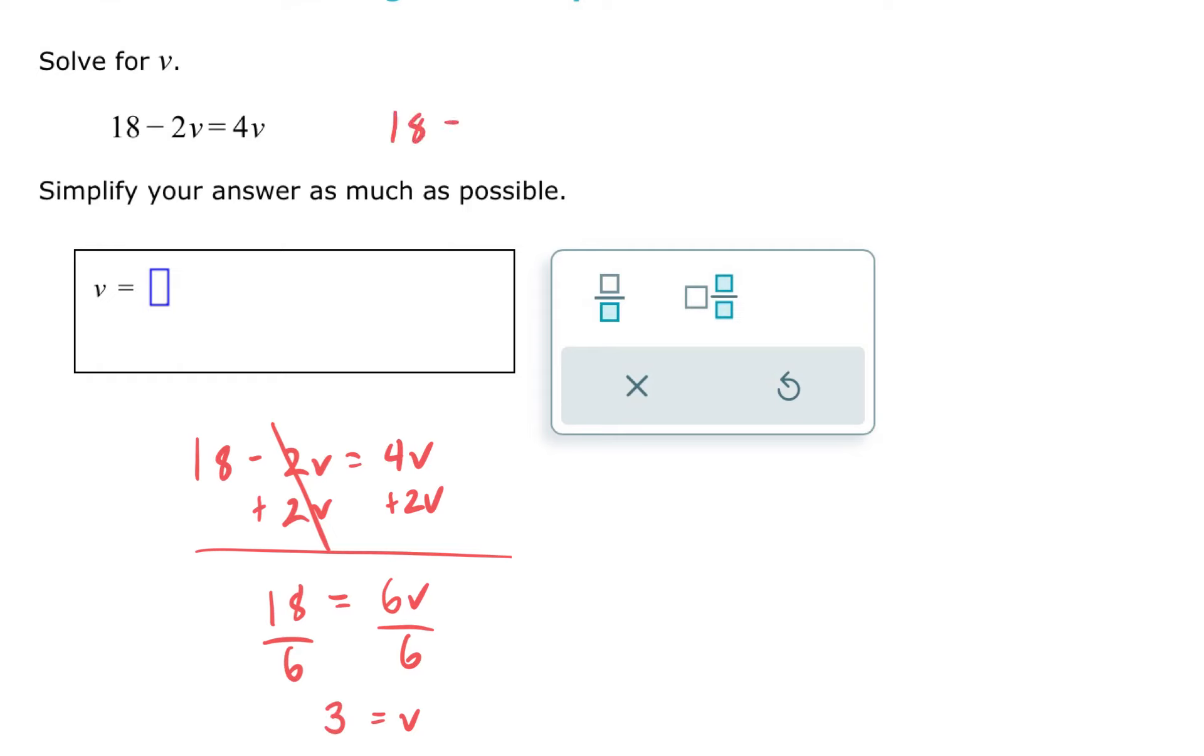Just like before, I'm going to substitute the value of my variable in the original equation and check to make sure everything's correct. So we have 18 minus 2 times 3, which is 6. And on the right hand side, we have 4 times 3, which is 12. 18 minus 6 equals 12. So I've confirmed that v equals 3.